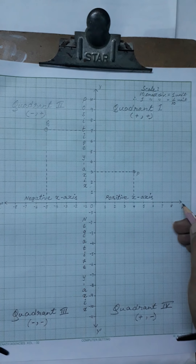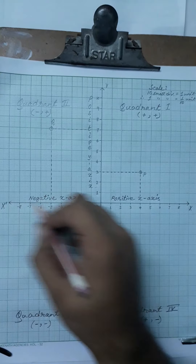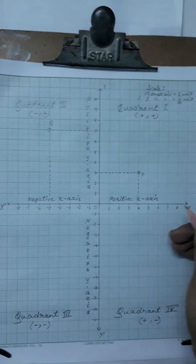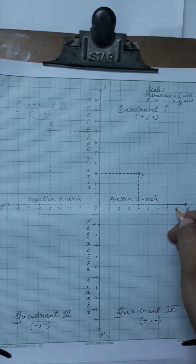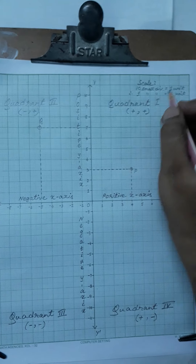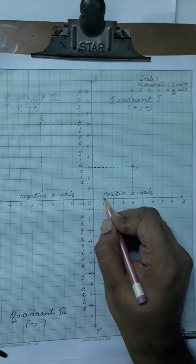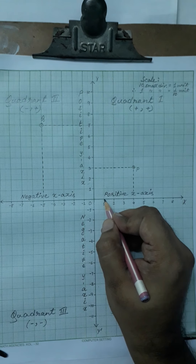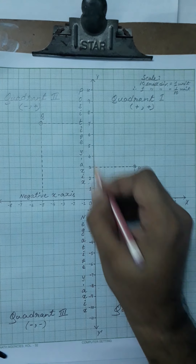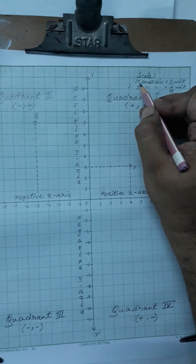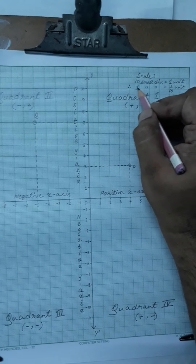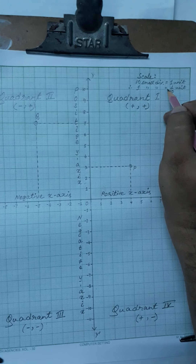For quadrant three, x is negative and y is also negative, so (−, −). For quadrant four, x is positive but y is negative, so (+, −). The axes have arrows because they can be extended upward, downward, right, and left to infinity. The scale must be written for a graph — here 10 small divisions equal one unit, so one small division equals one-tenth of a unit.